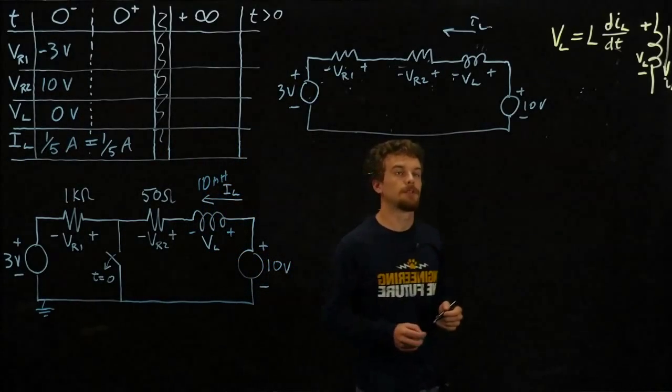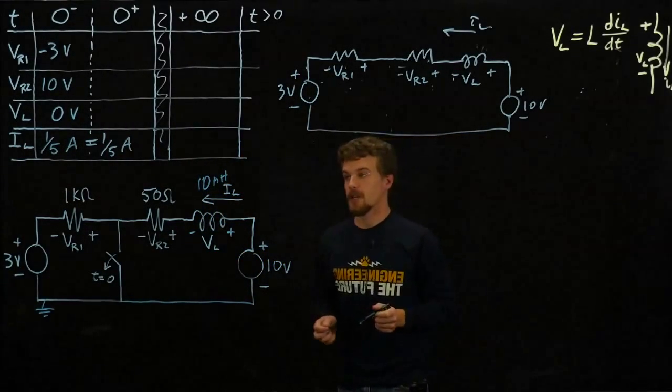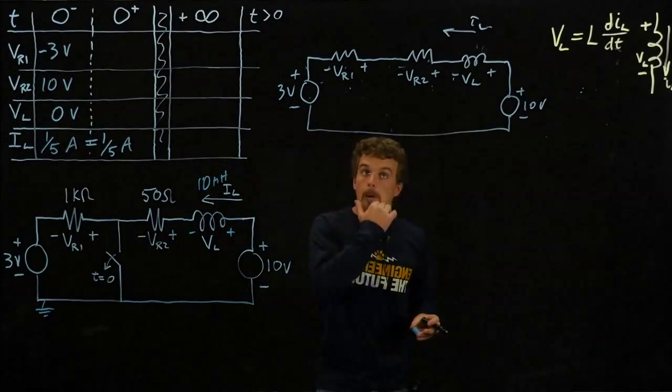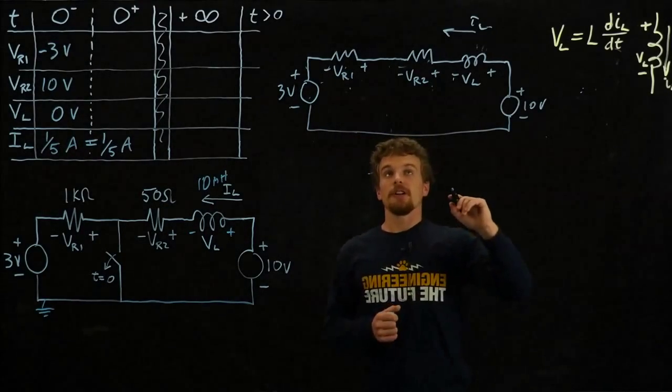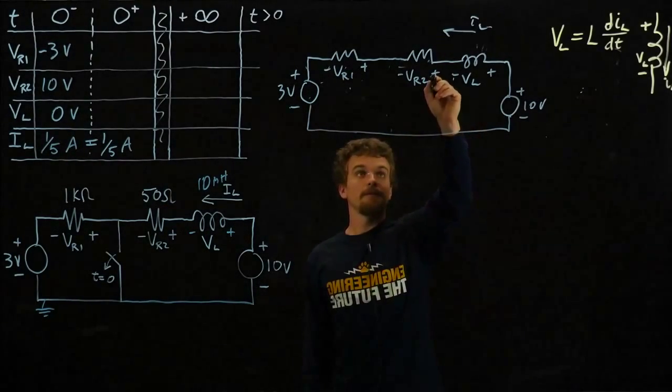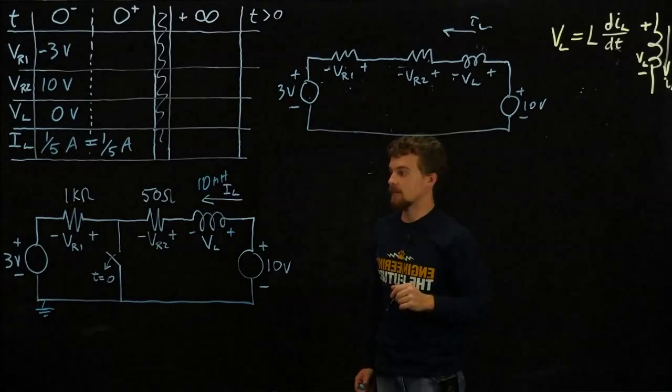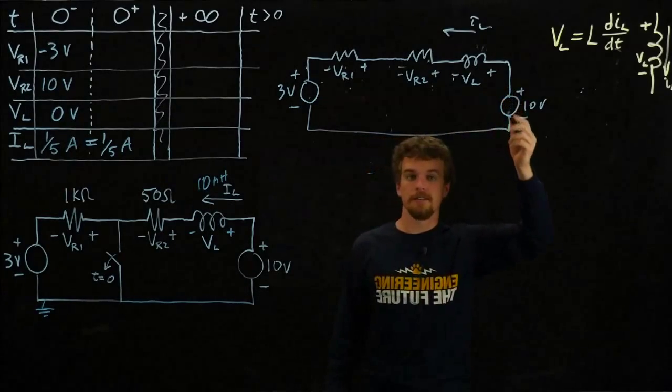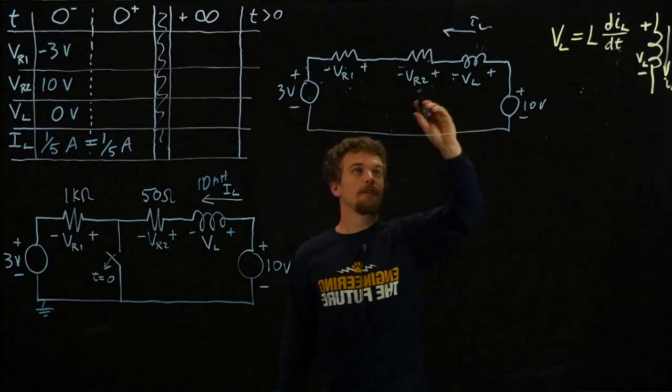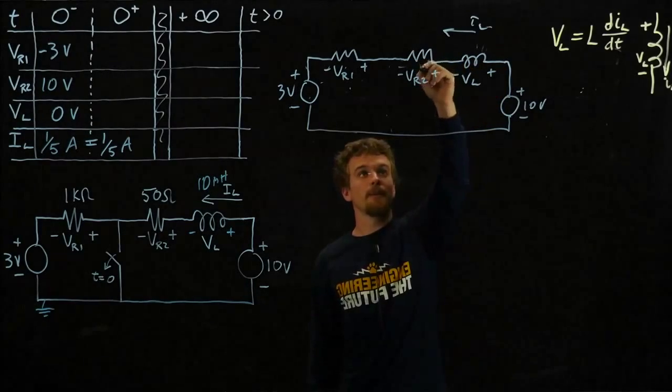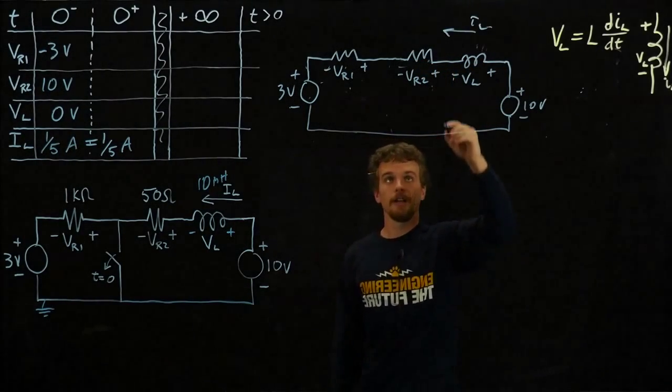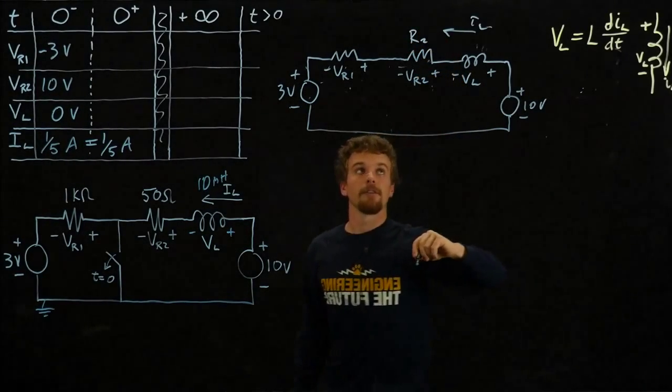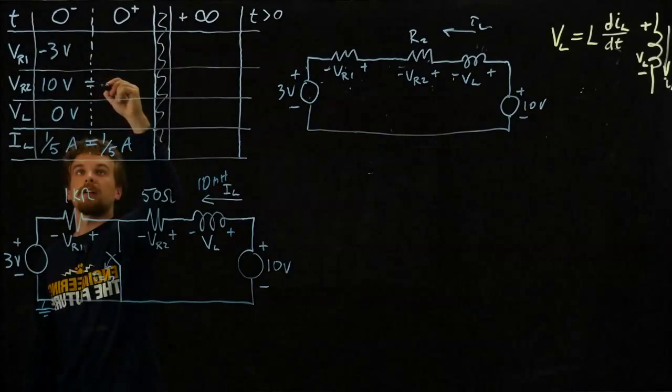What else can we find? The other thing that would change is Vr2. That's because it was defined by the current flowing through it, and that current doesn't change. Remember, our switch was over here, so this current has always been flowing through R2, and the voltage across it will stay the same right afterwards. So what is this? 10 volts.